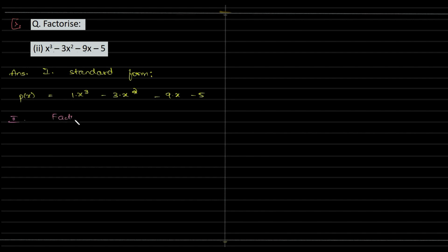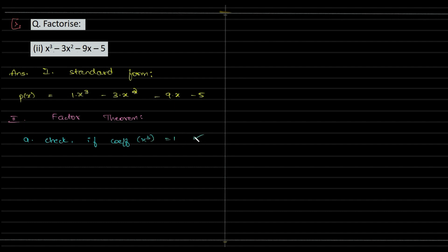The next step is your factor theorem. You're trying to figure out a factor using trial and error, but there's a condition we need to check: if the coefficient of x cubed is 1 — it is 1 — so we can continue on to the next step.